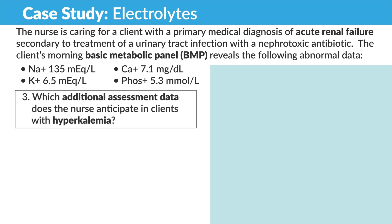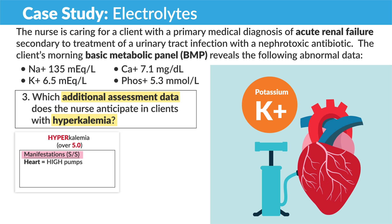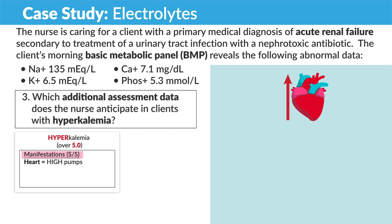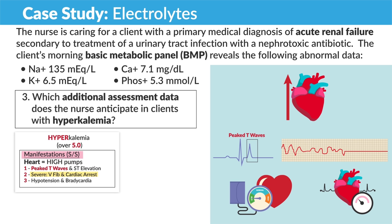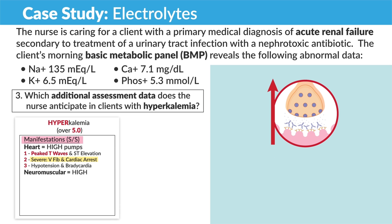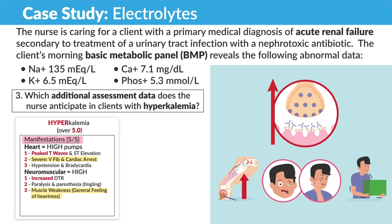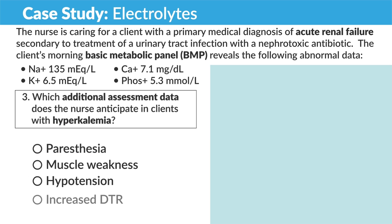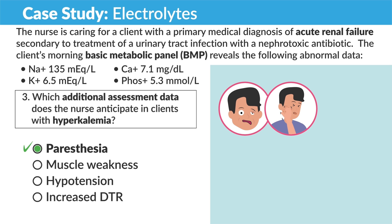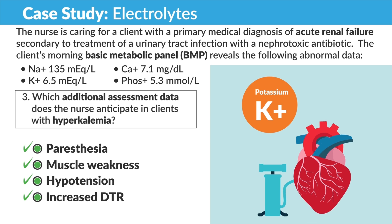This question is asking for additional assessment data for hyperkalemia, that high potassium. Think high pumps for high potassium. Your top three: peaked T waves with ST elevation, severe V-fib and cardiac arrest, and hypotension and bradycardia as the heart cramps up from that high pumping. Neuromuscularly, it'll be high as well — increased DTRs, paralysis, paresthesias — that tingling — and profound muscle weakness. In the GI, we have high pumps as well: diarrhea and hyperactive bowel sounds. The correct answers are paresthesia, that numbness and tingling sensation, muscle weakness, hypotension, and increased DTRs — those deep tendon reflexes. High potassium means high pumps.